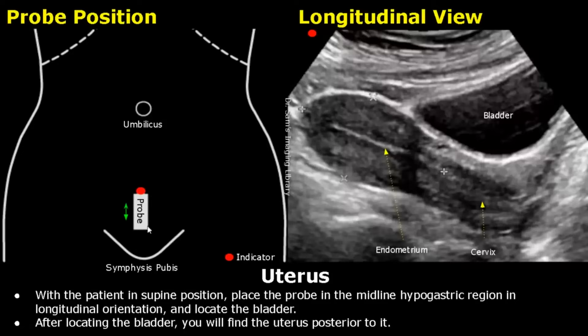On the left side is a schematic diagram showing the ultrasound probe position. These dotted lines are the right and left costal margins. This white box is the ultrasound probe and this red dot is the indicator or orientation marker. This is the inguinal region.